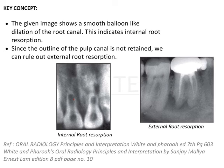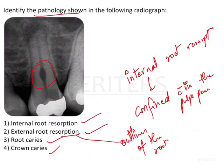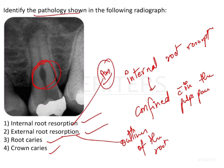In this case, lateral dilation is present — you can see internal root resorption in the image. In external root resorption, it occurs on the external surface of the root. Here, the pulp chamber outline is distorted and continuous with the pulp canal, confirming this is internal root resorption. Therefore, option one — internal root resorption — is the answer.